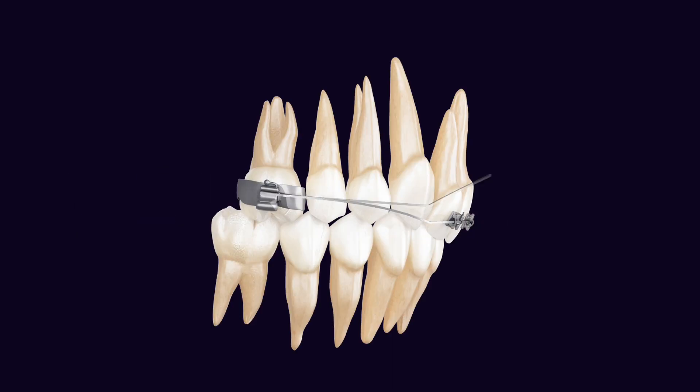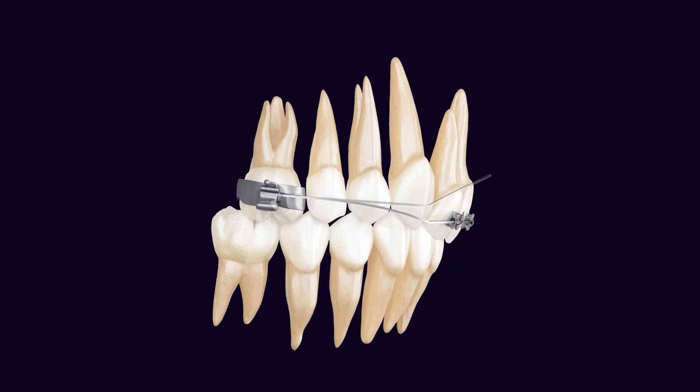Assume we have a case where the anterior teeth are retroclined and the patient has a deep bite. The target for now is the anterior teeth that need to be proclined and intruded. What happens if I design an anterior v-band for this patient? In this case I am actually producing conflicting mechanics. Yes, my anterior v-band will procline the upper anterior teeth, which is beneficial, but the anterior v-band will also extrude the anterior teeth, which conflicts with what I want. It improves the position of the target unit in one dimension but worsens it in another.